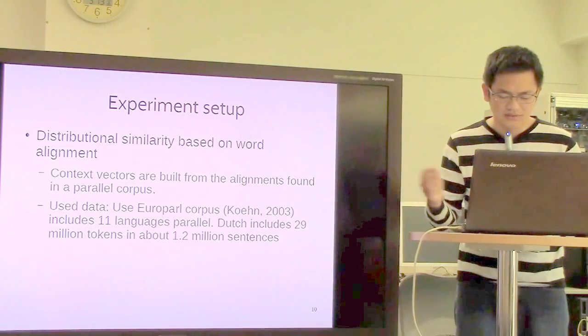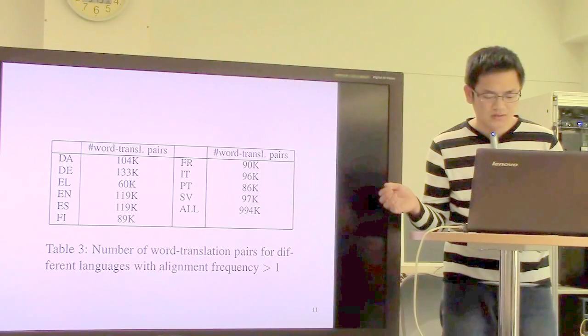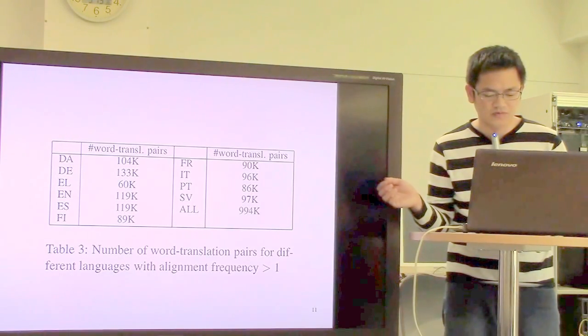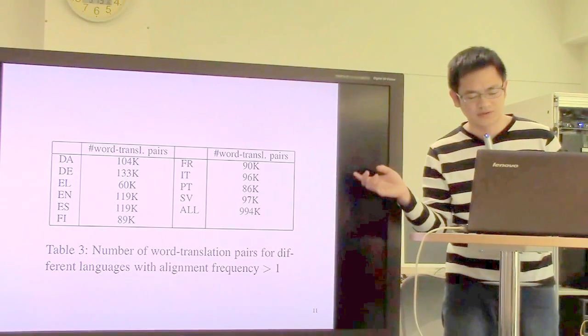The context vectors describe all the context alignments. In this table we see the number of context alignments for each language pair considered in the Europarl corpus.